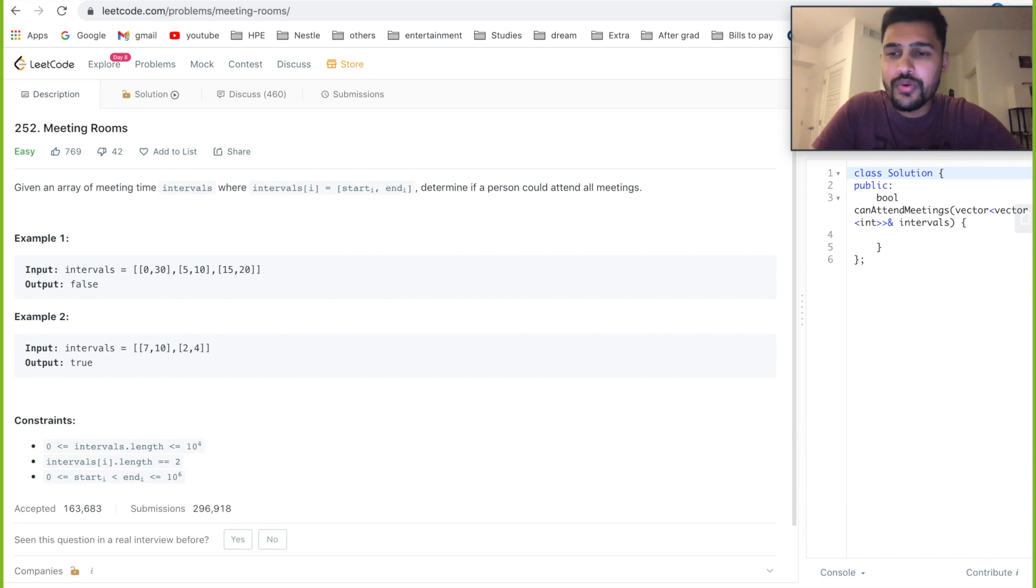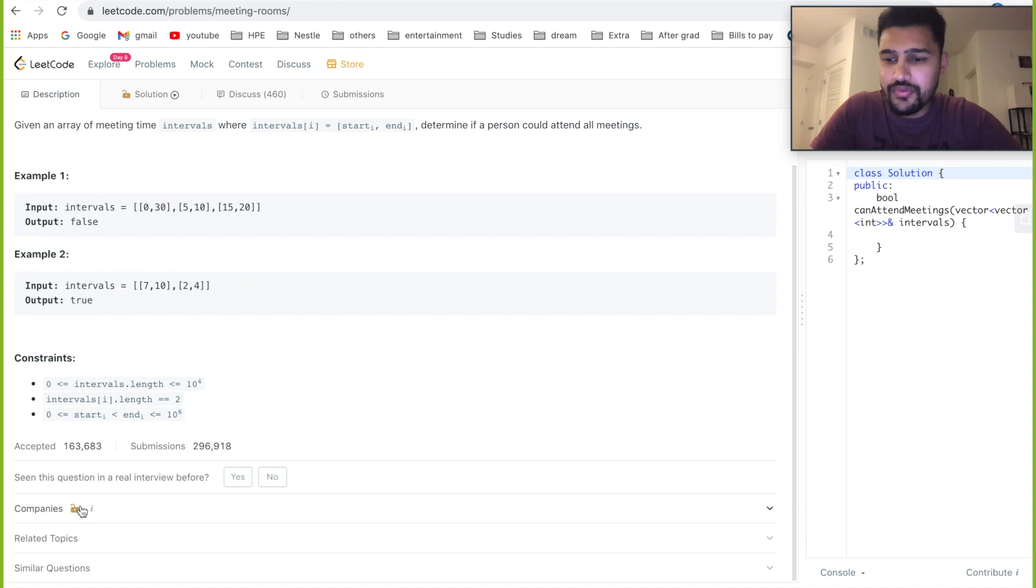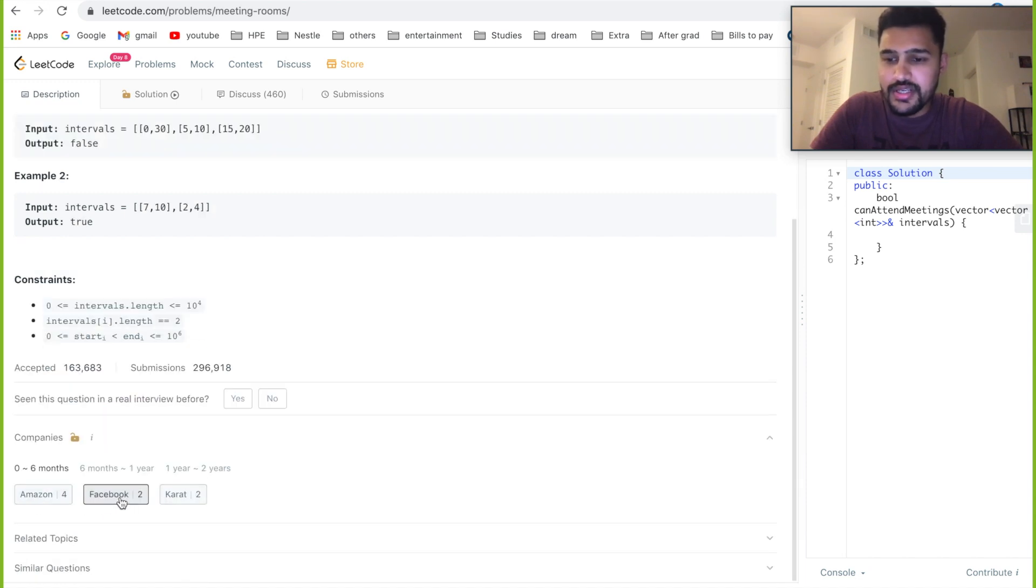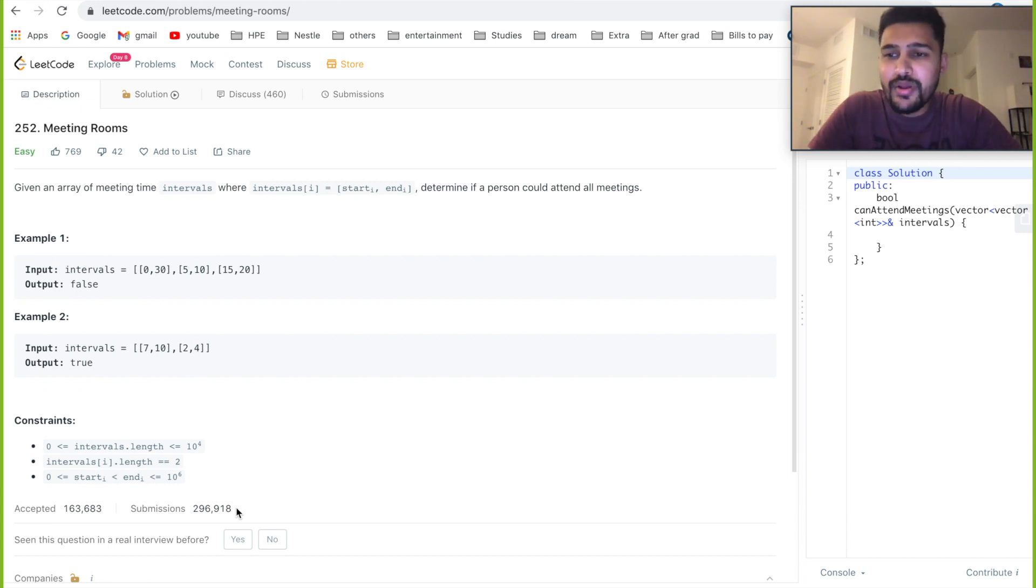So yeah, let's dig into today's problem. Today we'll be going through an easy-level problem. It's frequently asked in Facebook interviews. So if you can see here, it's asked in Facebook, Amazon, and Karat. The problem statement is: given an array of meeting time intervals where intervals[i] equals [start_time, end_time], determine if a person could attend all meetings. There are a couple of examples.